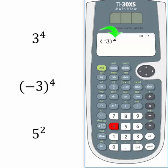Notice that the exponent 4 is located on the outside of the parentheses. Select enter. The answer is a positive 81.